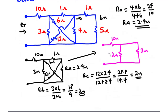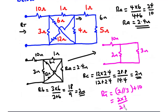Now the 2-ohm and 3-ohm resistors are connected in parallel, and they are in series with the 10-ohm resistor. So Rt equals 2 parallel 3, plus 10. Two parallel 3 equals 2 times 3 divided by 2 plus 3 equals 1.2 ohms. Therefore Rt equals 1.2 plus 10, which equals 11.2 ohms. That is the total resistance for this circuit. Thank you for watching; do subscribe if you are new here, and see you in my next video.